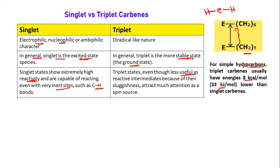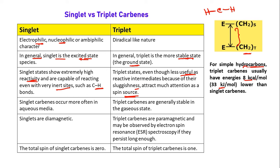Triplet states are less useful as reactive intermediates because their reactivity compared to singlet is low — they are less useful due to their sluggishness — but they attract much more attention as a spin source. Singlet carbenes occur more often in aqueous media, but triplet carbenes are stable in the gaseous state. Singlets are diamagnetic because there are no unpaired electrons, but triplet carbenes are paramagnetic due to two unpaired electrons.